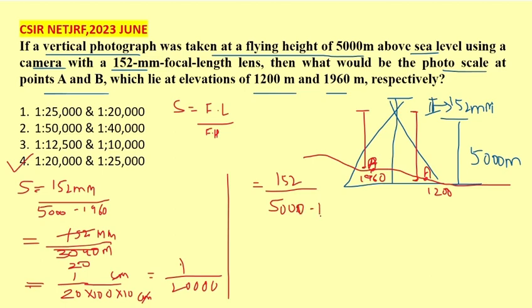1200. Now it is equal to 152, 1 by 3800.